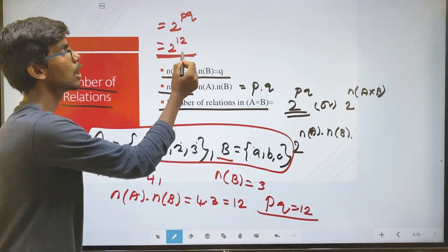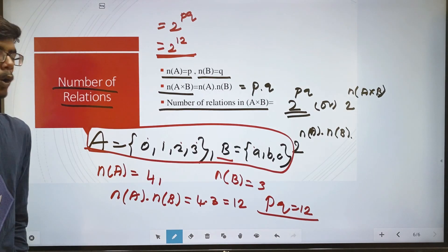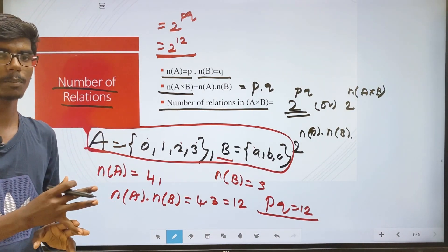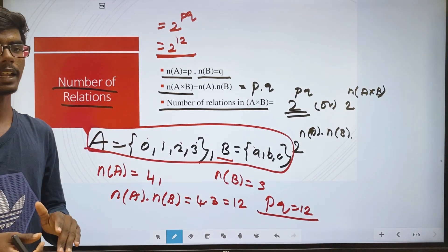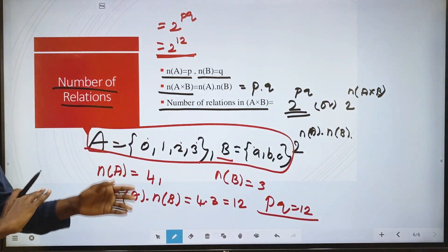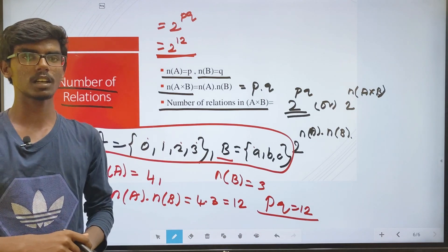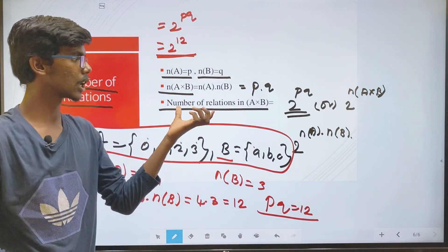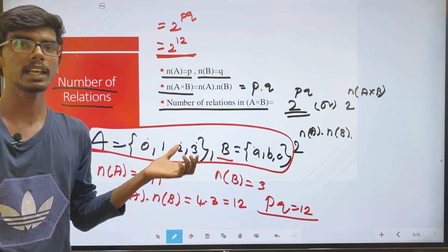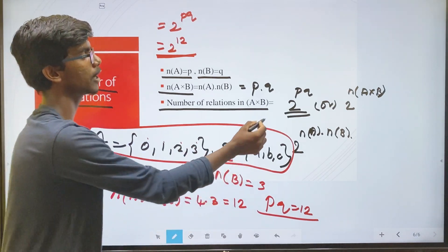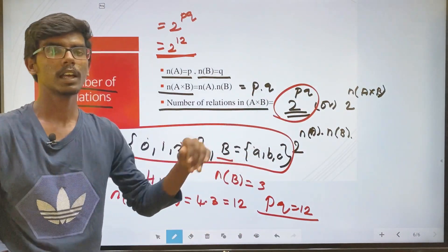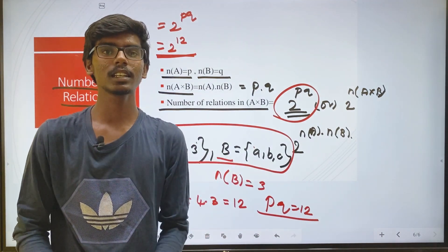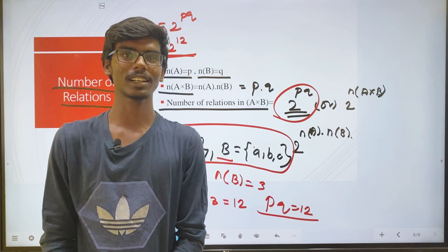So 2 power 12 relations are formed. We can find domain, co-domain, and range. Also, a null relation or empty relation can be formed. The number of relations: if you want to find how many relations exist between two sets, find the cross product first and then apply the formula 2 power PQ. This is the introduction to the chapter on Relations. Thank you friends, I'll see you next time.